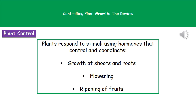Welcome to our review on controlling plant growth. It's not only animals that can respond to stimuli from their environment — plants also respond to stimuli and they use hormones to do this. They use these hormones in order to control and coordinate the growth of their shoots and their roots, to control and coordinate their flowering, and also the ripening of fruits.